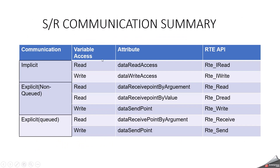This is the final summary of sender receiver communication. For implicit communication: to read, choose data read access — RTE generates RTE_IRead; to write, data write access — RTE generates RTE_IWrite. For explicit non-queued read, data receive point by argument — API is RTE_Read. In explicit non-queued communication, there are two ways to read: direct read using data receive point by value, or data receive point by argument. For write, data send point is used. Implicit uses data write access. In explicit queued communication, always use data send point for write and data receive point by argument for read.